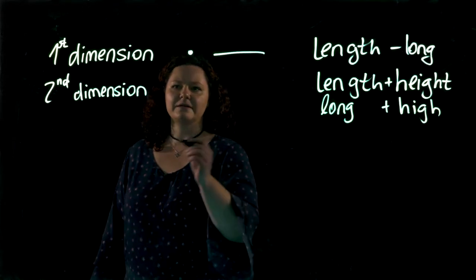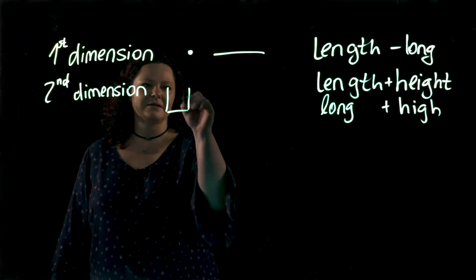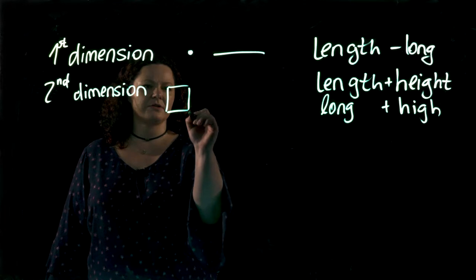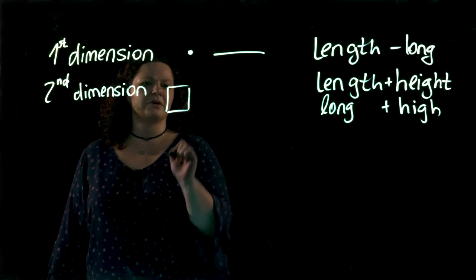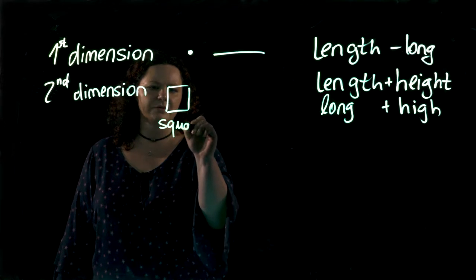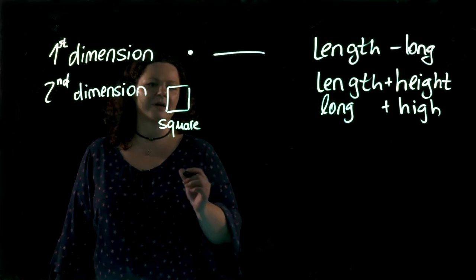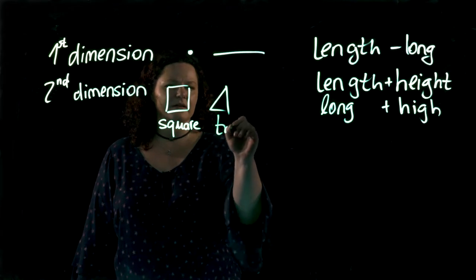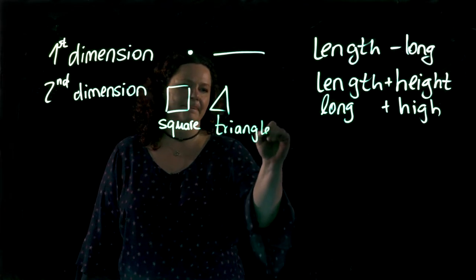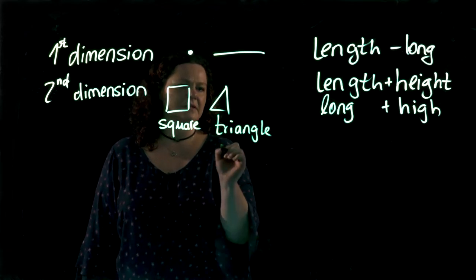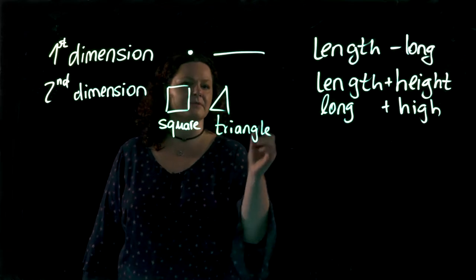For example, let's look at one example and this example is a square. So each side of the square has, for example, 2 cm and that would make the whole thing a square. Another one is then the triangle which has three sides and they can be of the same length or different length.